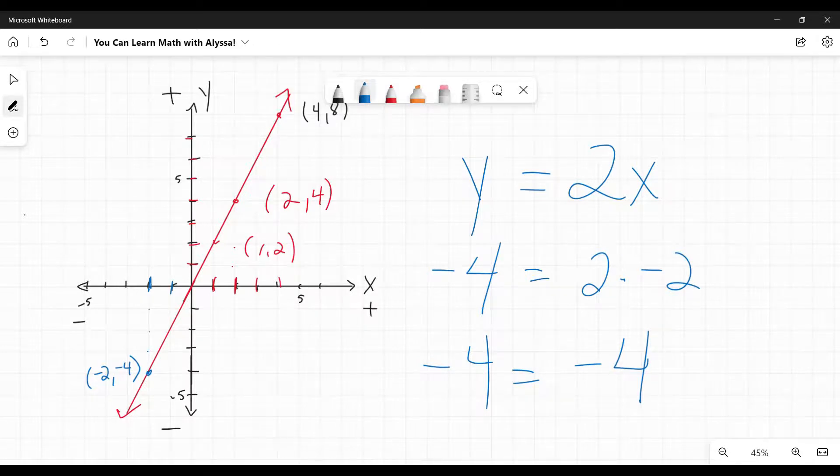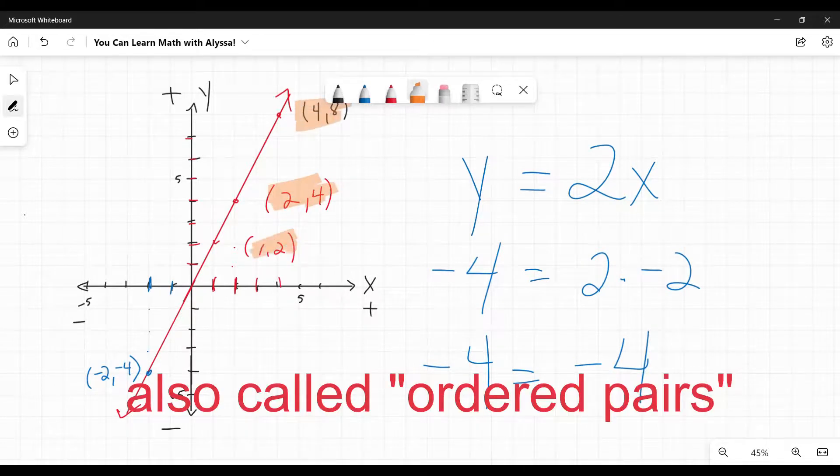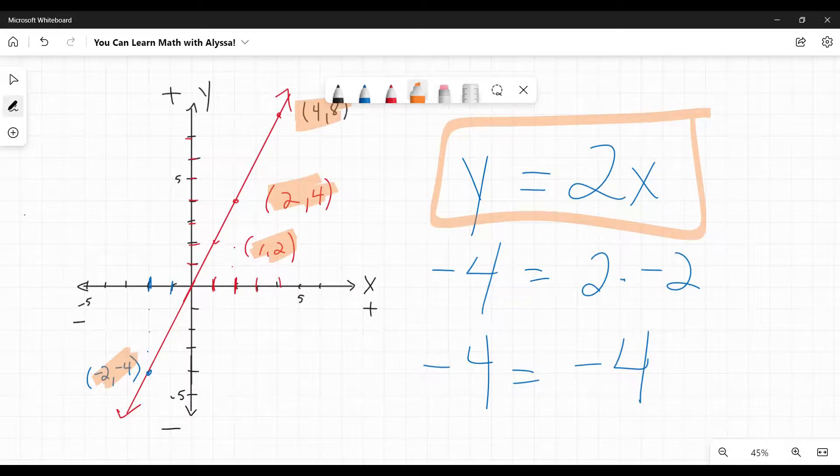So this is what a linear equation is. It is a visual representation of all the coordinate pairs. That's what these are called. These are called coordinate pairs. It's a representation of all the coordinate pairs that would make an equation that you're given true. And you can go either way. You can look at the line and find answers that will make the equation true.